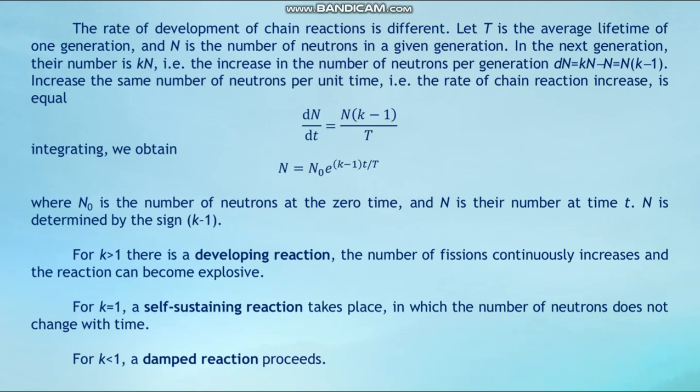N is determined by the sign of (k − 1). For k > 1, there is a developing reaction — the number of fissions continuously increases and the reaction can become explosive. For k = 1, a self-sustaining reaction takes place in which the number of neutrons does not change with time. For k < 1, a damped reaction proceeds.